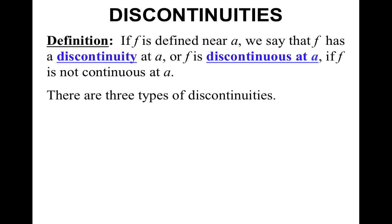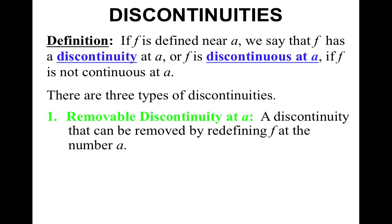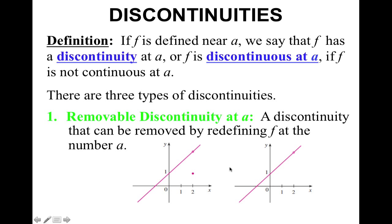There are three types of discontinuities. The first one is what we call removable discontinuity — a discontinuity that can be removed by redefining f at the number a. Graphically, you have to remove your pencil from the paper to get to the other side. In one graph f of a does exist, but the function value and the limit value are not the same, so part three fails. In the other graph, f of a does not exist, so part one fails and you can stop there.